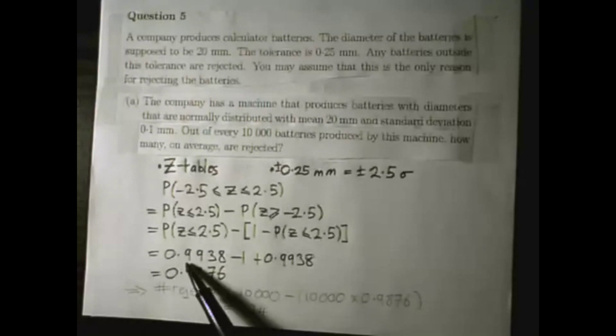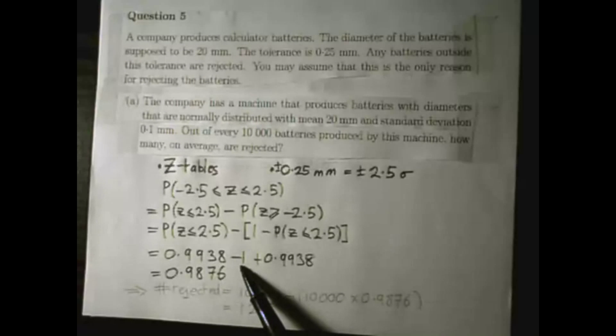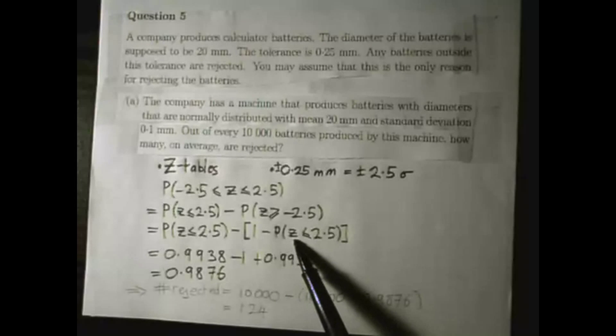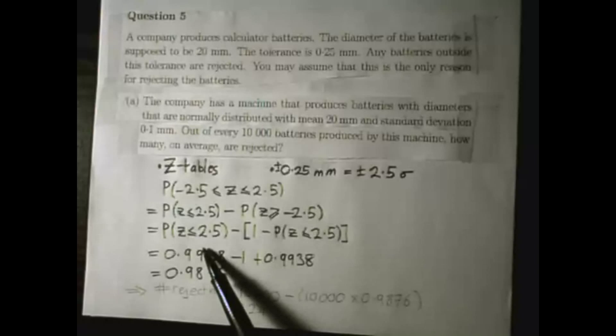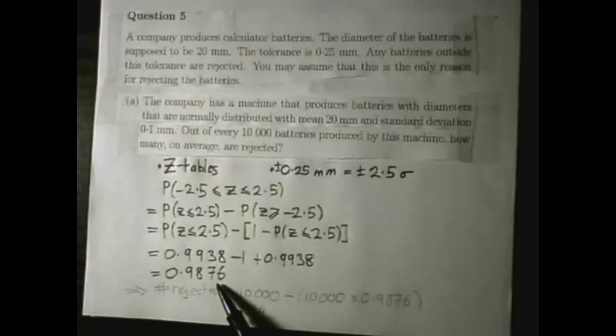So instead of writing this I write 0.9938, I've got a minus 1 and plus 0.9938. Remember this is z is less than 2.5 as well so it's equal to the same thing as this.